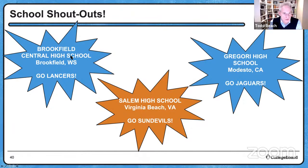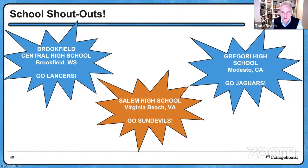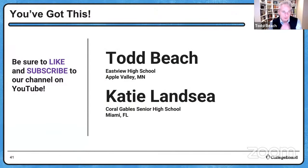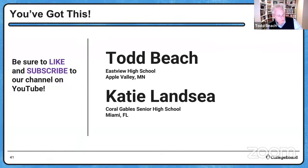Shout-out to these schools because they were giving us responses, and we really appreciate that. Brookfield Central High School in Brookfield, Wisconsin — they are the Lancers — some nice responses there. Salem High School in Virginia Beach, Virginia — they are the Sun Devils. And Gregori High School in Modesto, California — they are the Jaguars. We appreciate you watching, and we hope you're finding these videos really helpful. Please like and subscribe to our YouTube channel. I'm at Eastview High School in Apple Valley, and Katie is at Coral Gables Senior High School in Miami.